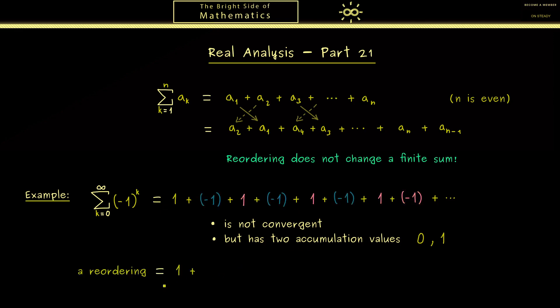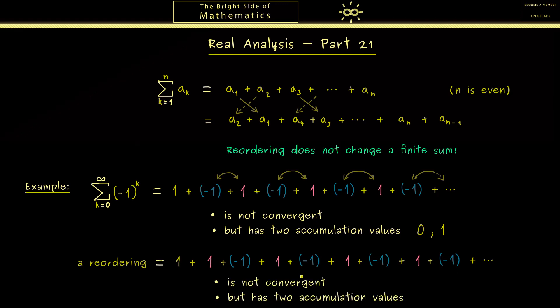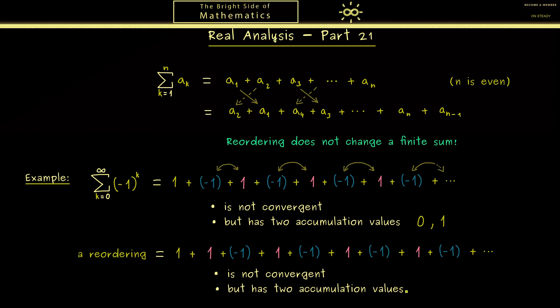We simply start with 1 again, but then I want to exchange these terms here. So what we get is this new series. The first thing you see immediately is that with the reordering the series is still not convergent. However, we still find two different accumulation values, but now it's 1 and 2. So the first lesson we've learned here is always be careful when you reorder an infinite series.